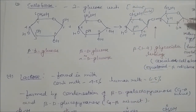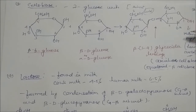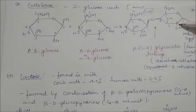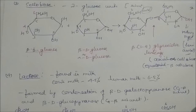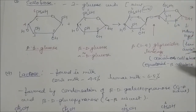The hemiacetal end of cellobiose can be up (axial) or down (equatorial). If axial, it is called alpha-cellobiose; if equatorial, it is called beta-cellobiose. So there are two anomeric forms: alpha-cellobiose and beta-cellobiose.